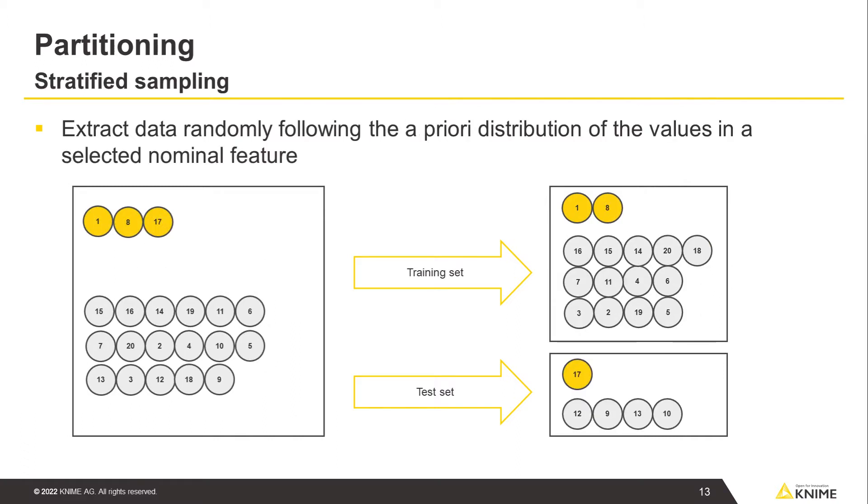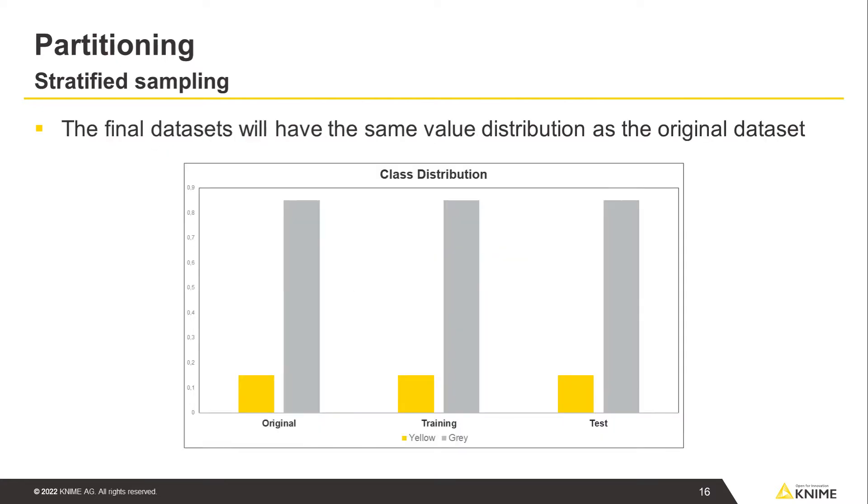Stratified sampling also extracts data randomly from the original data set, but following an a priori distribution of the values in a selected nominal feature. In this way, the final data sets will have the same value distribution of that feature as the original data set. This strategy is often selected for classification tasks to make sure that both training set and test set have the same a priori distribution of the target class values as the original data set. This is particularly important when you have a strong class imbalance, as it ensures that the minority class is represented sufficiently in both sets.